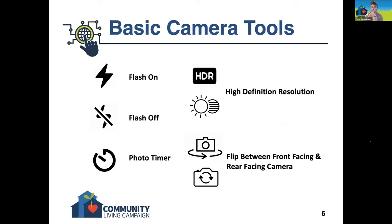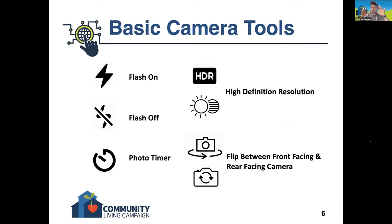If you see HDR or a symbol that looks like a sun with a shadowy moon behind it, it'll usually be at the top of your screen when you open the camera app. Without getting too bogged down in the science behind it, it really just means the camera is going to sense the light around you to adjust the focus and create a high-definition photo for you.